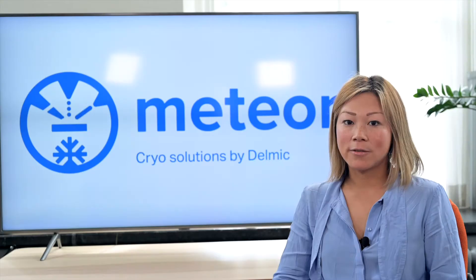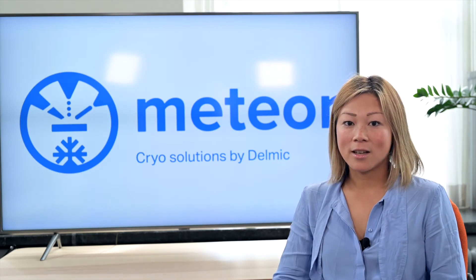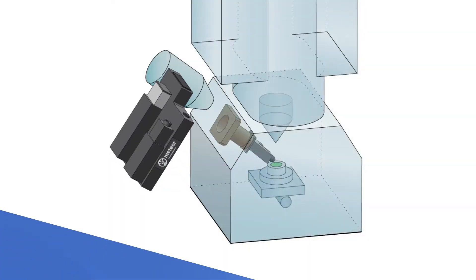MeChia is the first commercially available integrated fluorescence microscope module that can be fitted into a cryo-FIB-SEM chamber.